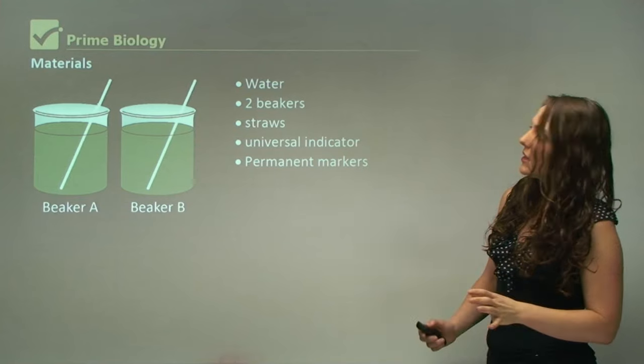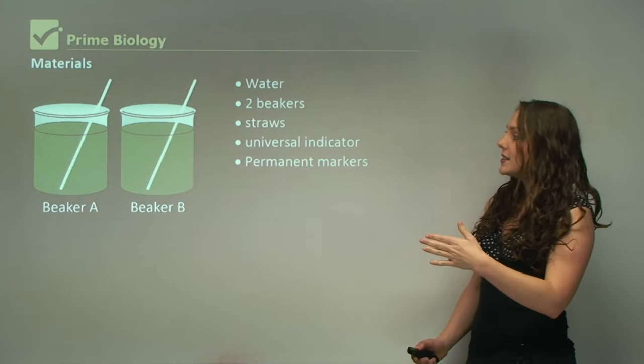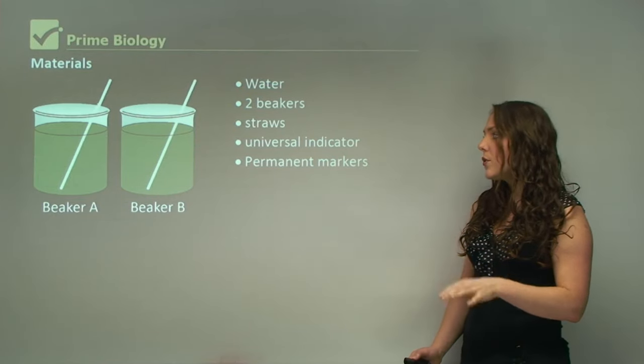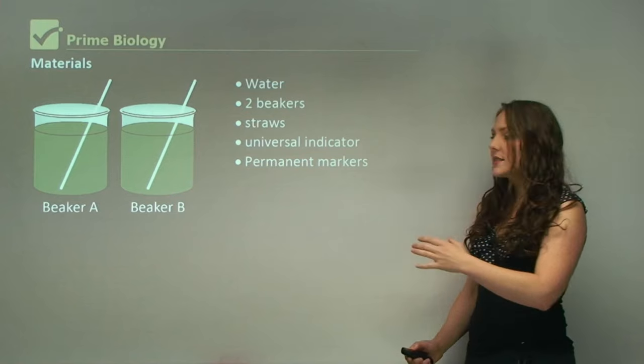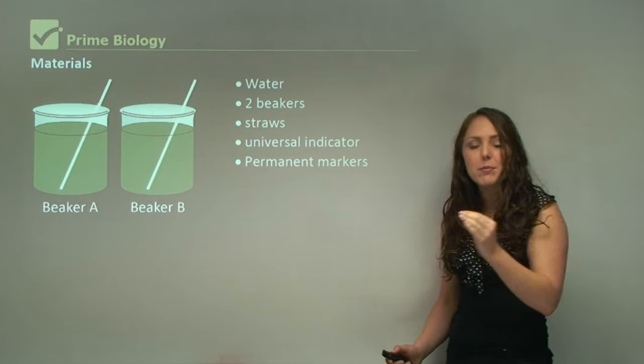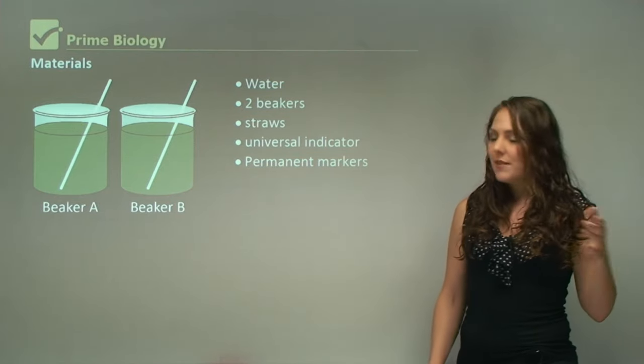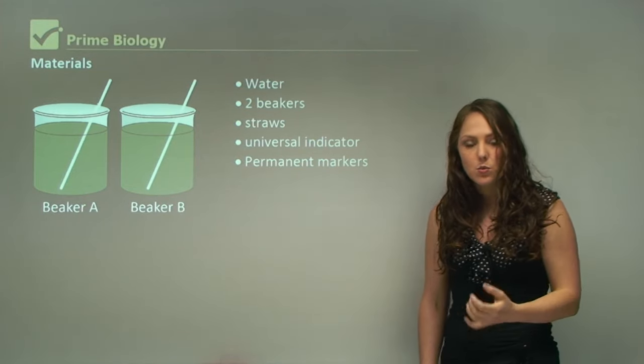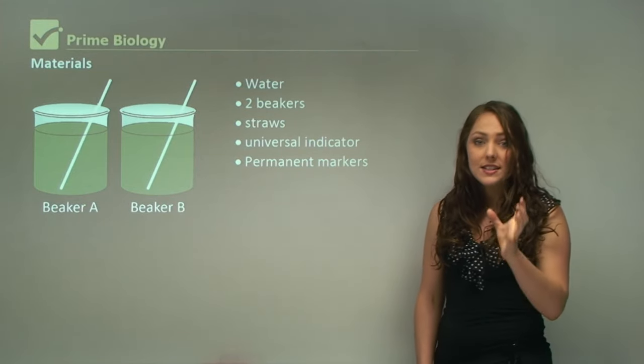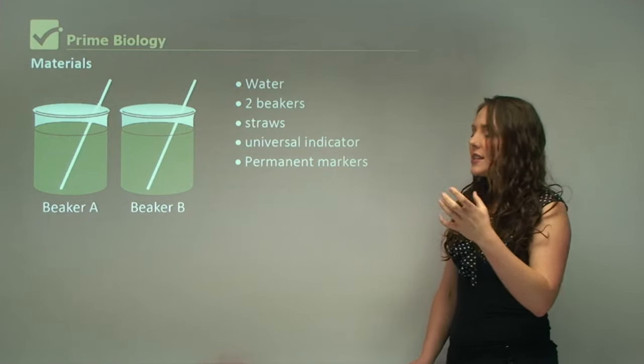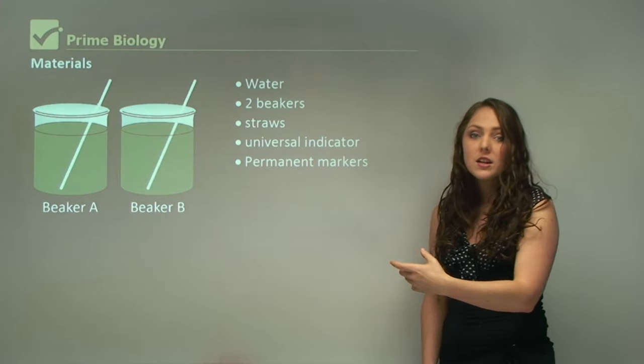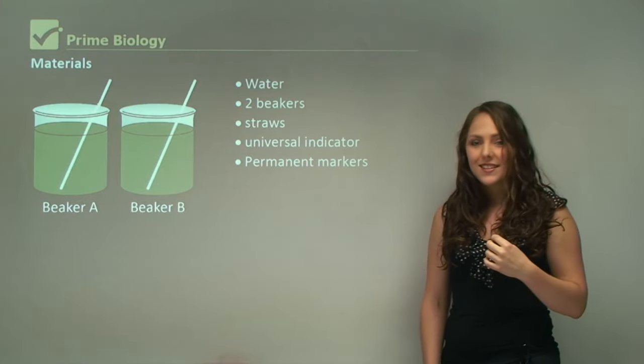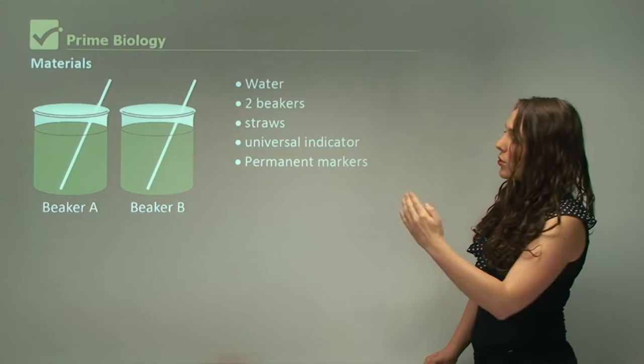The materials here: we need water, two beakers, straws, universal indicator, and permanent markers. We need permanent markers to label these beakers A and B. We need universal indicator, which colors the water. Universal indicator is different in each science lab, so some might color the water a different color compared to this one. Keep that in mind.